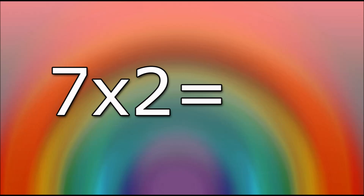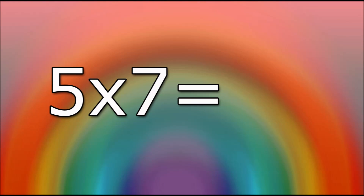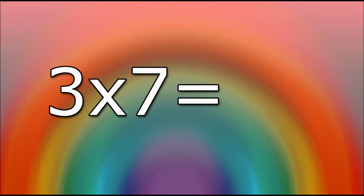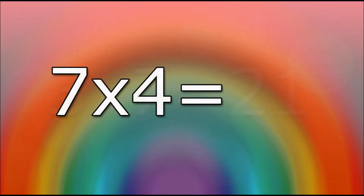7 times 2 equals... 14. 5 times 7 equals... 35. 3 times 7 equals... 21. 7 times 4 equals... 28.